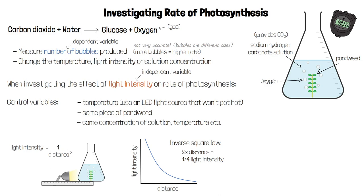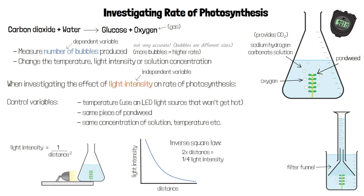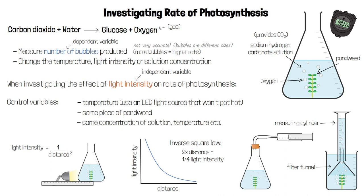Counting the number of bubbles in one minute is not very accurate, because the size of each bubble can vary, and there are sometimes too many to count. Instead, we can place a filter funnel over the pond weed to catch any bubbles produced, then fill a measuring cylinder with the solution, and invert this over the top of the filter funnel. Bubbles produced pass through the funnel and into the measuring cylinder, where they will displace solution from the top, allowing us to measure the volume of gas produced. We could also attach the flask to a gas syringe to measure the volume of gas produced.